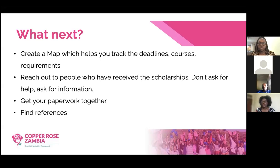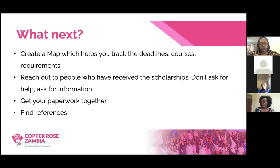Second, reach out to people who've received the scholarships you're targeting. When you reach out, don't just ask for general help — make your request very clear and specific. Say: 'I'm applying for this scholarship. I want help choosing the course.' That way, people will be more likely and more able to help you. You can ask them what courses suit you, or ask them to proofread your essays. Don't make it sound like you want them to write the application for you.